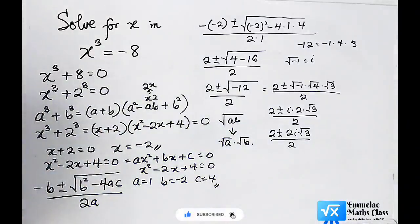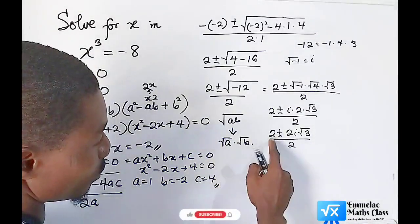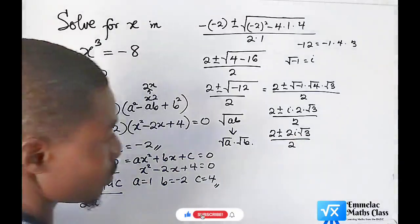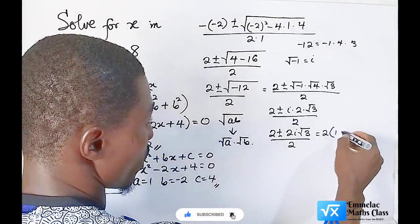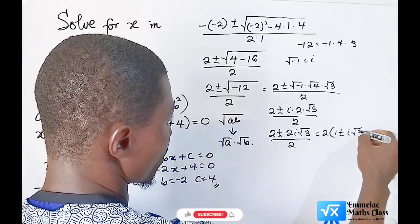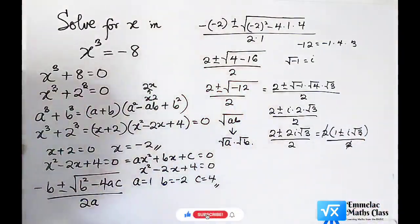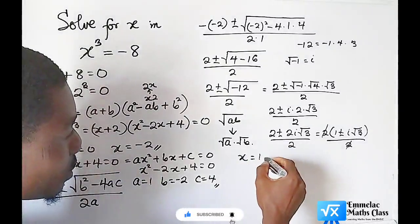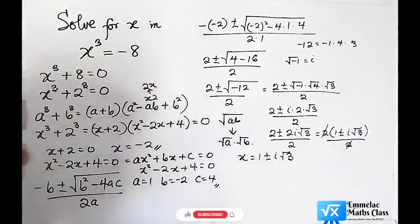We can see that we have 2 as a common factor between 2 and this imaginary number. If we factor out 2, this will give us 2(1 ± i√3) / 2. We can now eliminate the 2s. So x will give us 1 ± i√3.